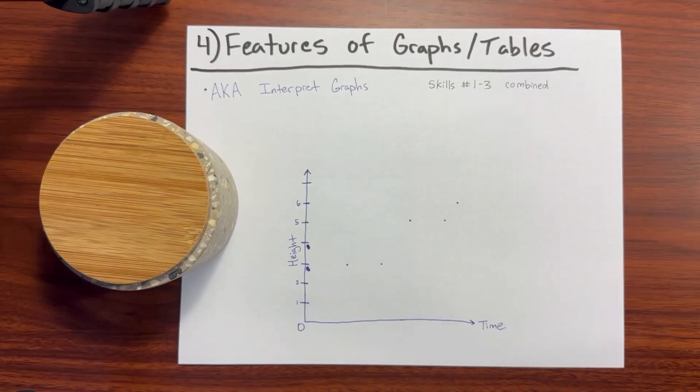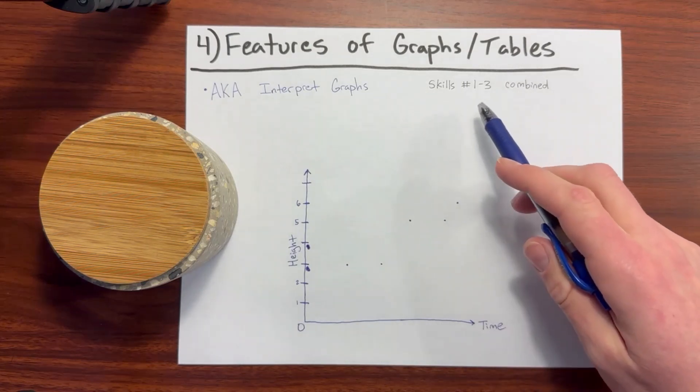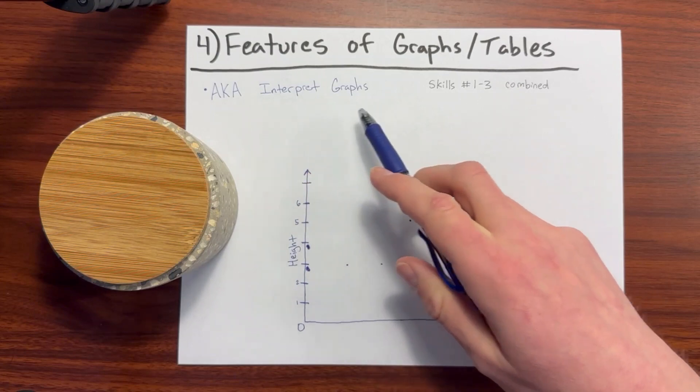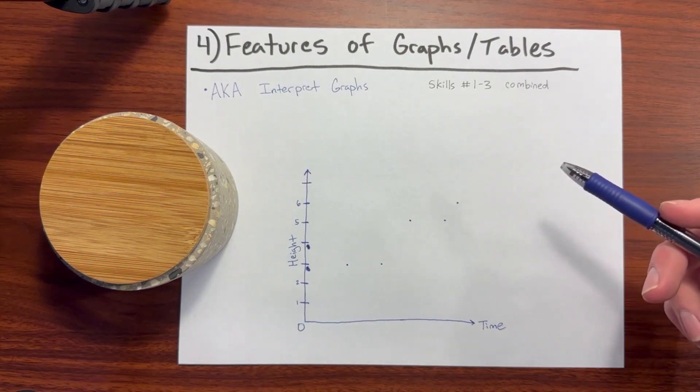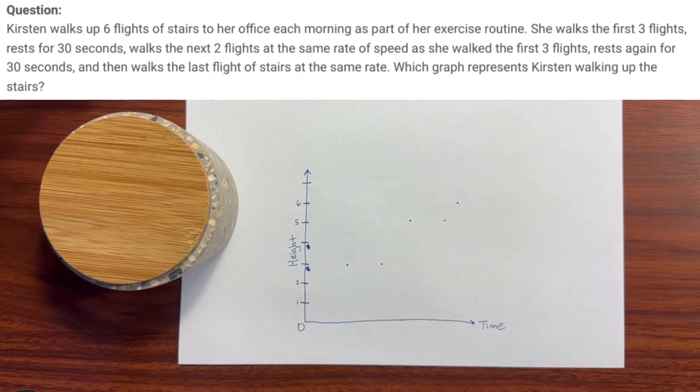Number 4: Features of graphs and tables. With the knowledge of skills number 1 through 3 combined, we're going to be interpreting graphs or data points from tables that would be overlaid on a graph. So I am going to put up a sample question on the screen and read it out loud. So it says Kristen walks up 6 flights of stairs to her office each morning as part of her exercise routine. She walks the first 3 steps, rests for 30 seconds, walks the next 2 flights at the same rate as she walked the first 3 flights, rests again for 30 seconds, then walks the last flight of stairs at the same rate. Which graph represents Kristen walking up the stairs? So let's go ahead and graph this.